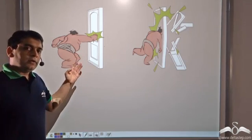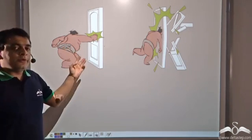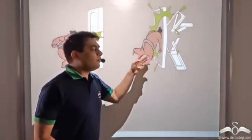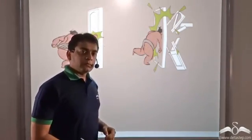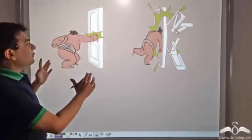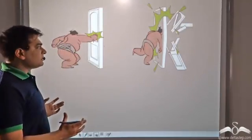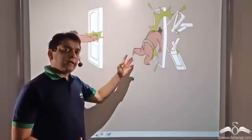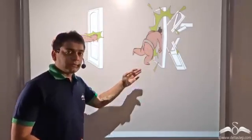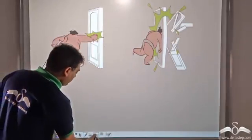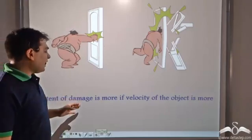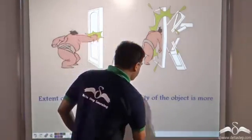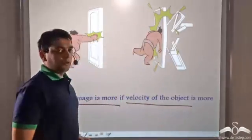So here we saw that while the sumo wrestler was unable to break the door with a single punch, he was able to break the door when he came running into the door. So what was the difference here between these two cases? Well, in the second case the sumo wrestler had a greater velocity. So again we can conclude that the extent of damage caused is more if the velocity of the object causing the damage is more.